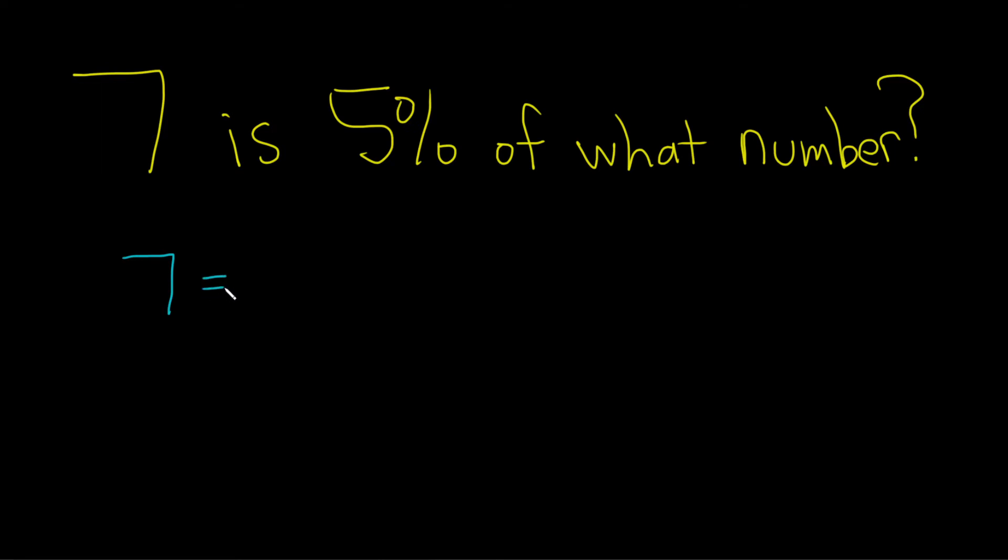And then we have 5%, so that needs to become a decimal. So what you do is, you put the decimal here to start with, and then you go two places to the left. So 1, 2, and then you put a dot. And then look, there's an extra place here, so you put a 0. So 5% is actually 0.05.